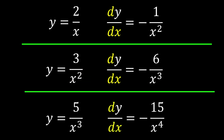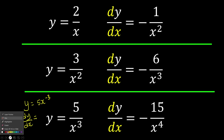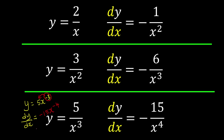Same thing: when we have y equal to 5 over x cubed, we can rewrite it as y equals 5x to the power of negative 3. Carrying out the differentiation using the power rule, the negative 3 comes to the front times the 5, giving negative 15x to the power of negative 4. If you want to prettify it, that becomes negative 15 over x to the power of 4.